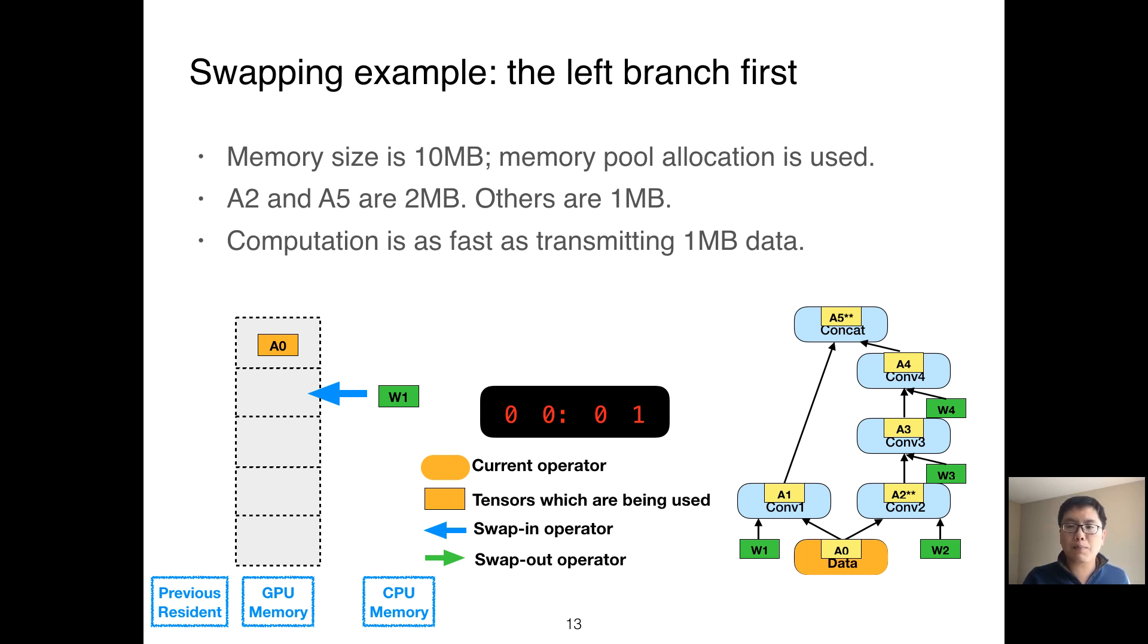As we discussed in the background, a parameter tensor has to be swapped from CPU memory to GPU memory before it can be used. The blue arrow here is a swapping operator. At T2, we are going to execute convolution 1, so we use the third memory object for A1 and the fourth memory object for prefetching W2. At T3, we need one memory object for A2 and one for prefetching W3.